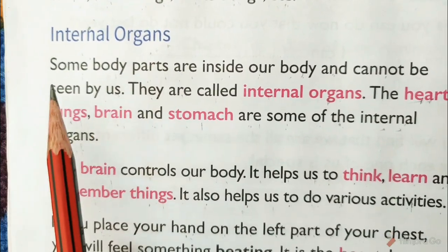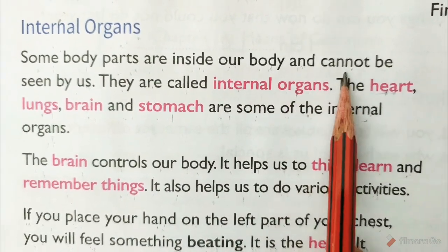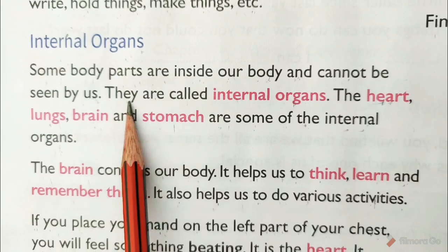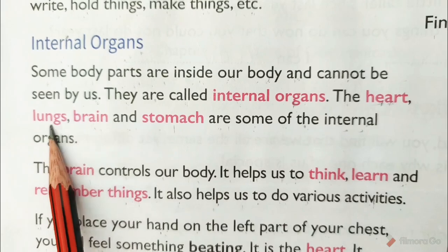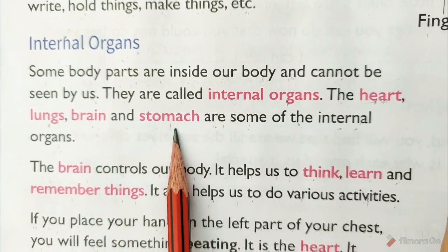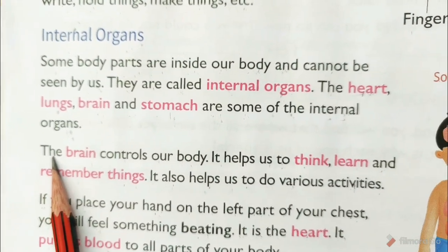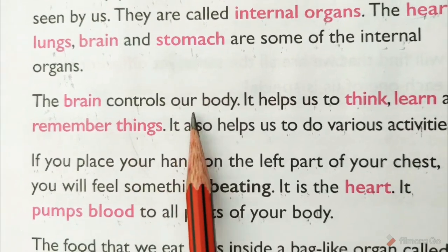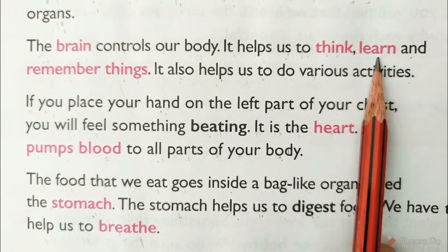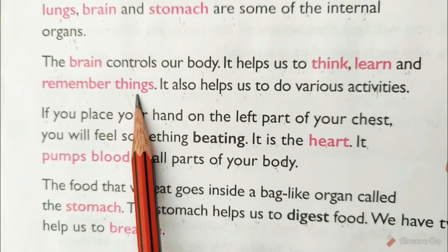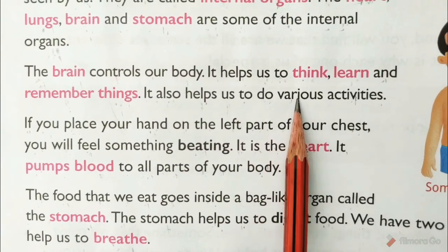Internal organs. Some body parts are inside our body and cannot be seen by us. They are called internal organs. The heart, lungs, brain and stomach are some of the internal organs. The brain controls our body. It helps us to think, learn and remember things. It also helps us to do various activities.